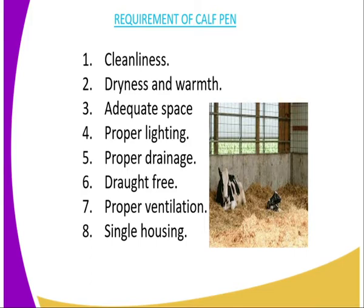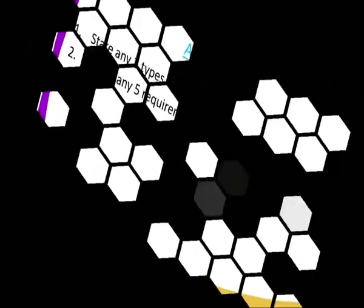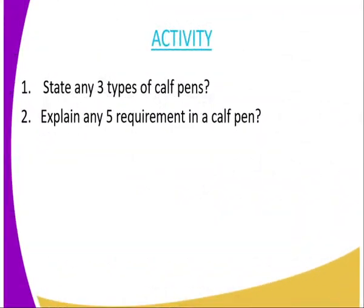Then we have proper ventilation. The calf pen should allow free circulation of air, because air is very important during the animal's life — it facilitates gas exchange and the process of respiration, whereby oxygen is taken in and used during oxidation of food for energy production. Finally, single housing is also a requirement. Calves should not be placed two in the same room, because it will encourage one calf licking the other, and they may end up swallowing hair balls, which will upset digestion.